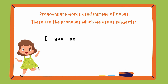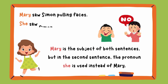Pronouns are words used instead of nouns. These are the pronouns which we use as subjects: I, You, He, She, It, We, They. For example: 'Mary saw Simon pulling faces.' She saw Simon pulling faces. Mary is the subject of both sentences, but in the second sentence, the pronoun 'she' is used instead of Mary.